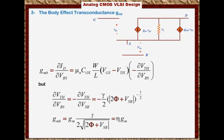Keep in mind that if the source and the body are the same, then Vsb is 0. That means the current source is 0. And if the current source is 0, it's open circuit, you take it out.